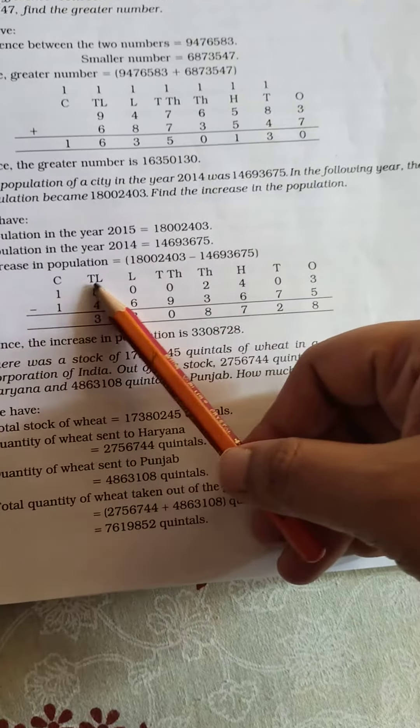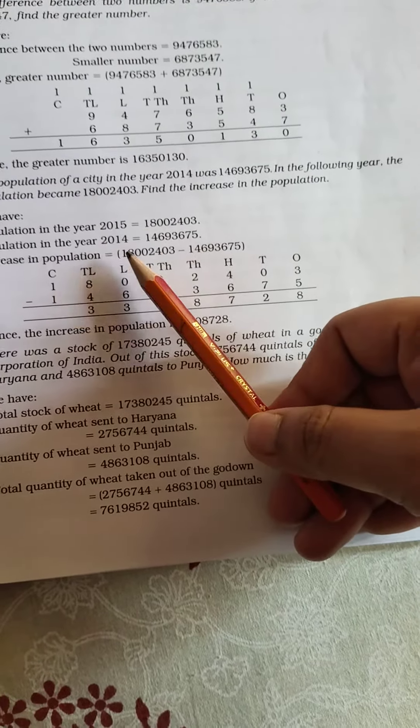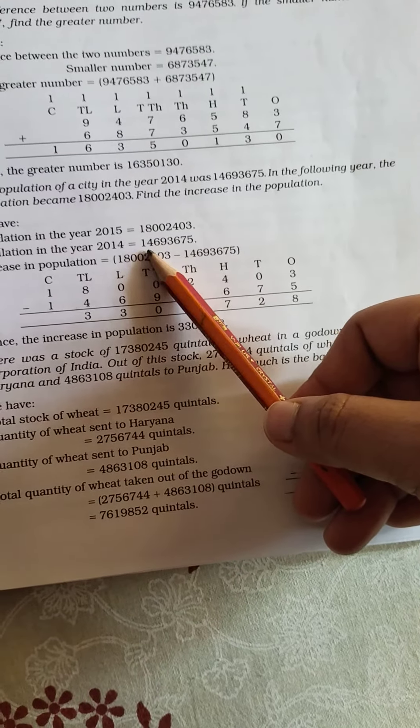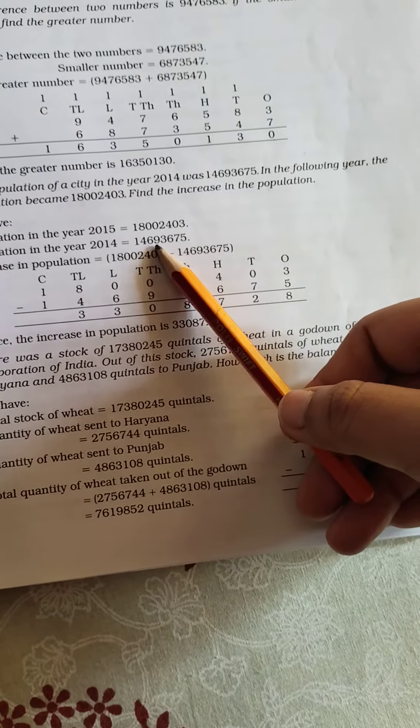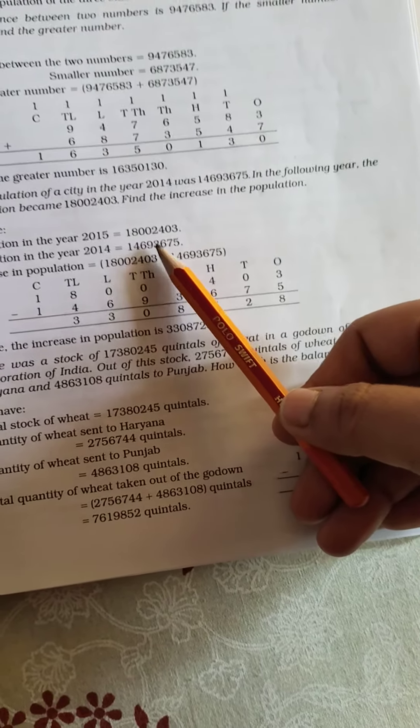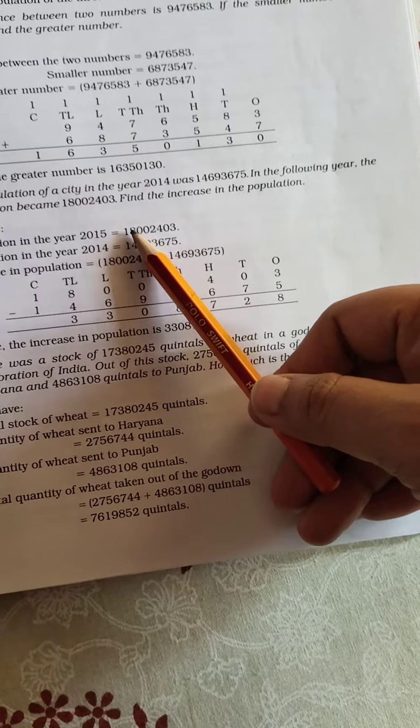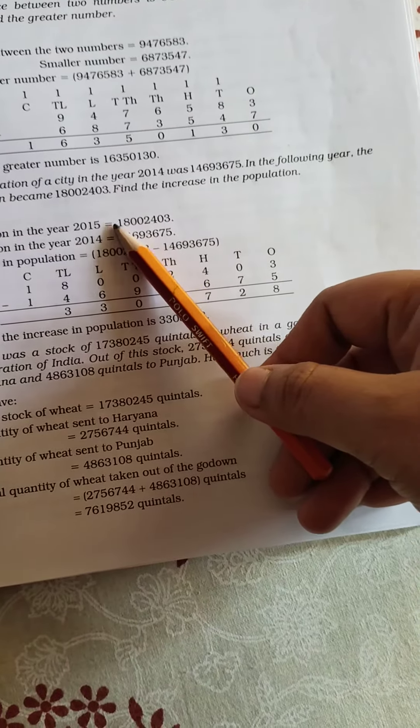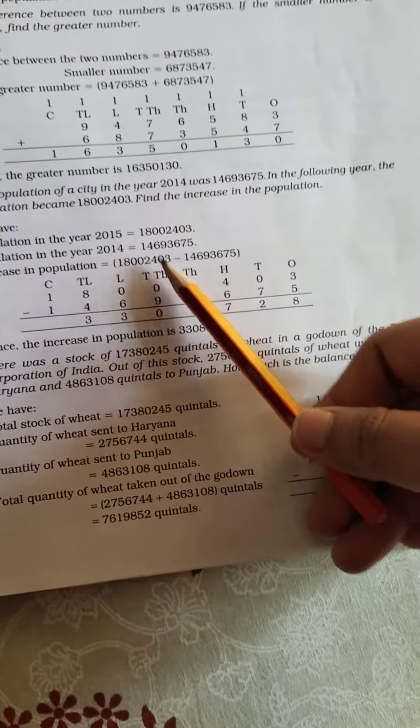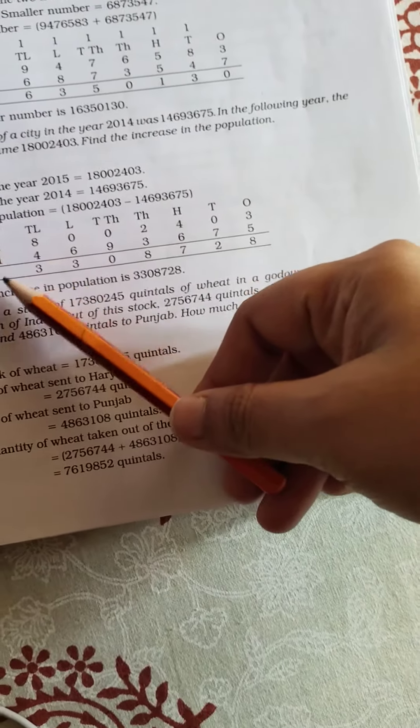So, increase in population will be, we have to subtract 1,046,093,675 from this number. It is 1 crore 80,002,403. Then only we can find the increase in population.